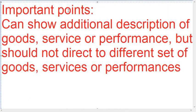The important point in C5 is: the invoice can show an additional description of goods, services or performance, but that additional description should not point to a different set of goods, services or performance. It should point to the same goods, services or performance supplied. Like the example of sewed shoes — sewed shoes and imitation sewed shoes are altogether different, just like gold and imitation gold.